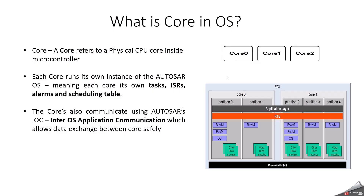For example, Core 0 handles communication tasks, Core 1 handles control tasks, and Core 2 handles diagnostic tasks. Each core runs its own instance of the Autosar OS in the multi-core perspective and can schedule its own tasks independently. Communication between cores happens via inter-core communication mechanisms like shared memory or Autosar IOC (Inter-OS Application Communication). Core startup and synchronization are managed by the OS startup sequence.